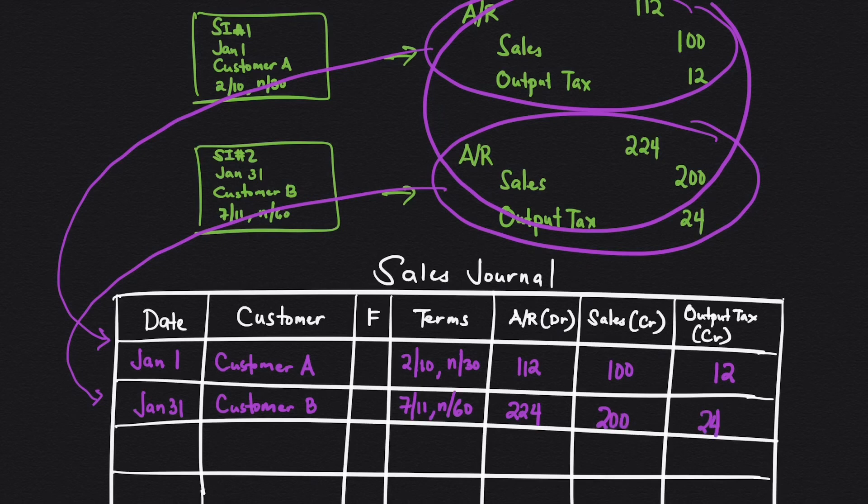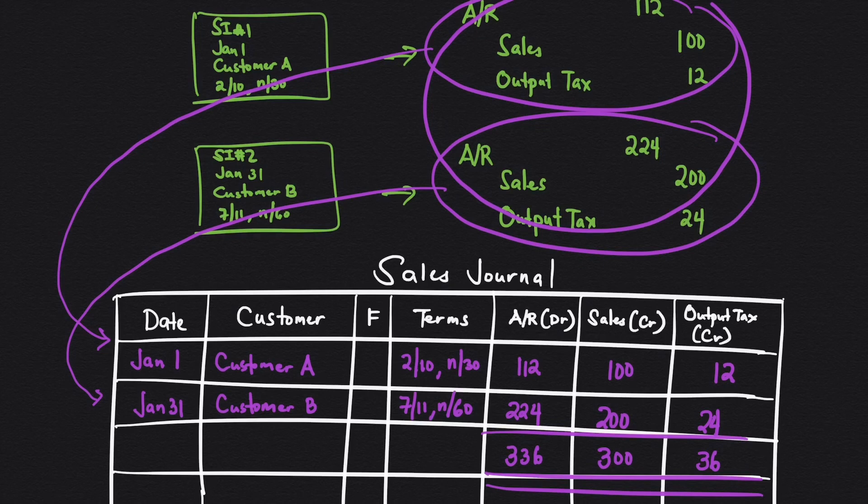Let's say you only have these two transactions for the month. In the sales journal, you would be getting the total for each account title. For A/R it's 336. For the sales, 300. Then for the output tax, it's 36. And then we double the rule. So we are done with the sales journal for the month.